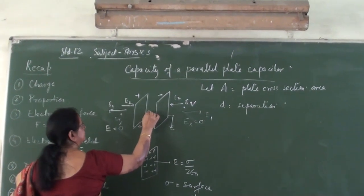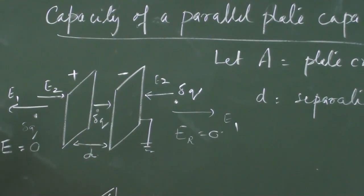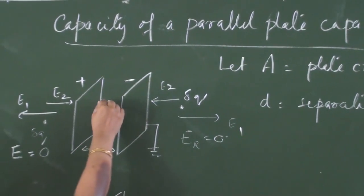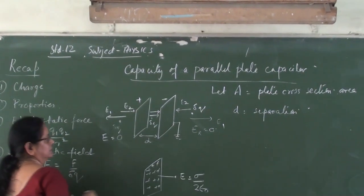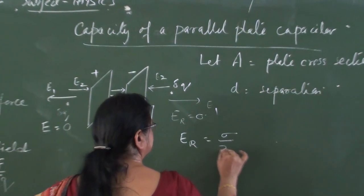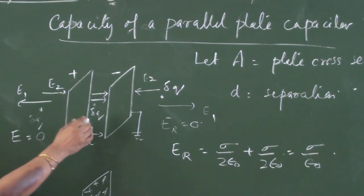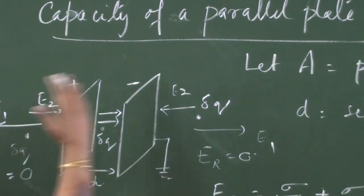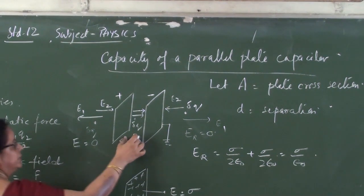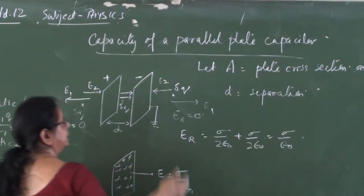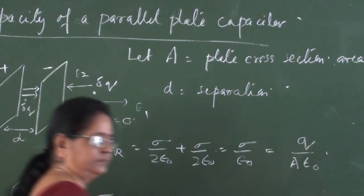However, if we consider a test charge somewhere in between the plates, the positive plate repels the test charge in one direction and the negative plate attracts it in the same direction, so both fields add up. The resultant field is sigma by 2 epsilon-naught plus sigma by 2 epsilon-naught, which equals sigma by epsilon-naught. So the field outside the plates is always zero, but the field between the plates is a uniform electric field of magnitude sigma by epsilon-naught, where sigma equals Q by A.